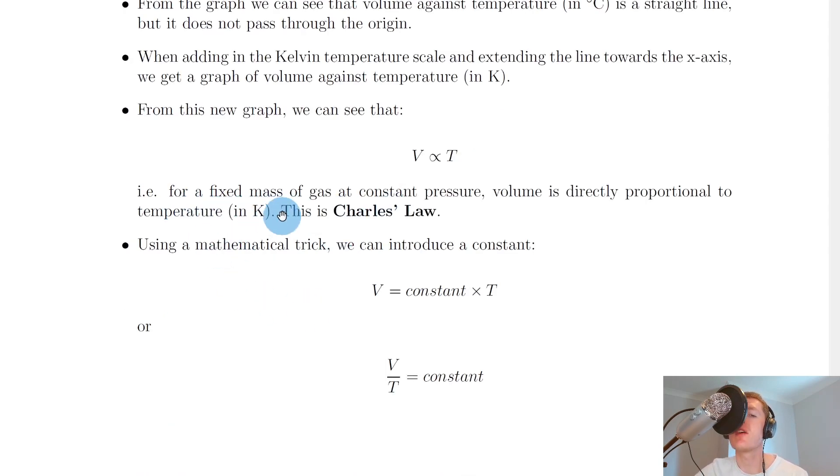In word form we could conclude that for a fixed mass of gas at constant pressure, volume is directly proportional to temperature in kelvin. This is what we call Charles's law, the volume temperature law. Remember this law only holds when temperature is in kelvin, not in degrees Celsius.